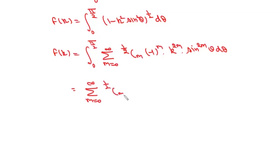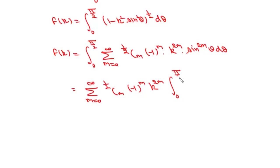We can rewrite this as the summation over m from 0 to infinity of C(1/2, m) times (−1)^m times k^(2m) times the integral from 0 to π/2 of sin^(2m)θ dθ.